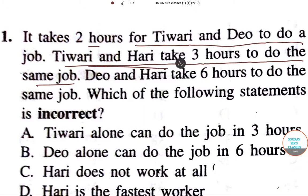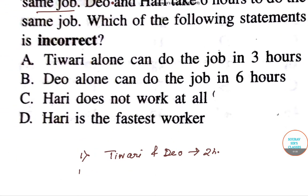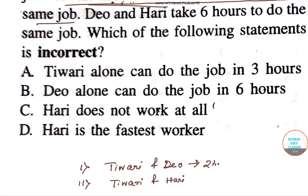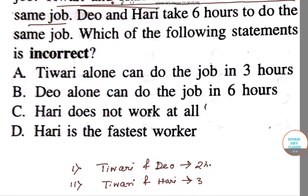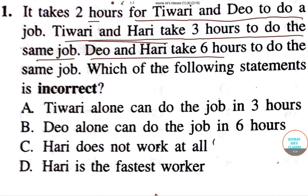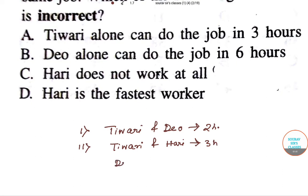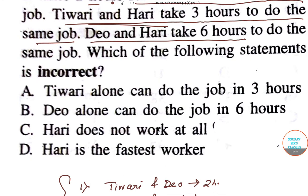So to clarify — the second condition is Tiwari and Hari, not Tiwari and Dio. Tiwari and Hari take three hours. The third condition is: Dio and Hari take six hours to do the job.